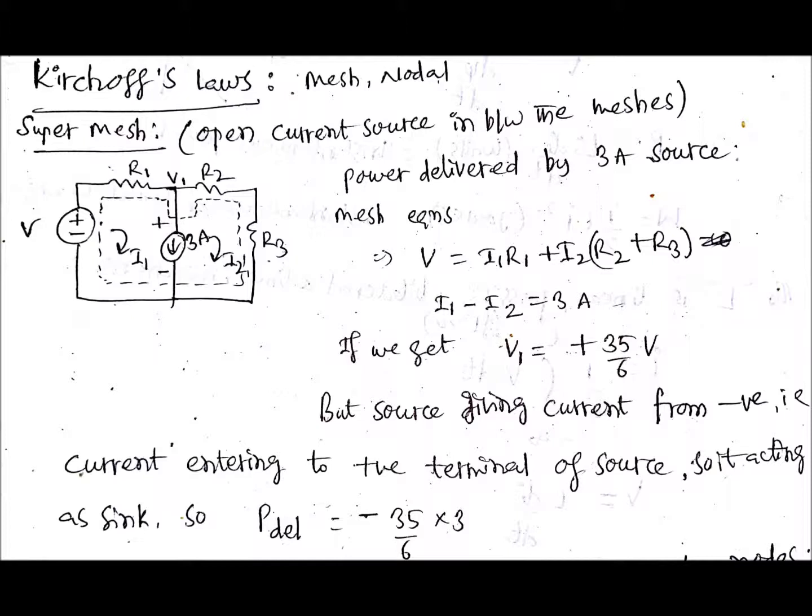So here you will get i1 minus i2 equals to 3 amperes. Then if you get V1 equals to some positive voltage, let us say i1 minus i2 is 3 amperes and V1 is some positive voltage. But if you observe, the source is giving current from negative, that is current entering to positive terminal of source.